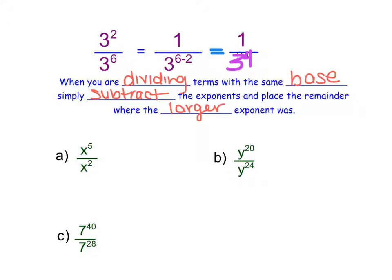We're going to practice this with a couple of examples. In example A, I have x to the power of 5 and x to the power of 2 on different sides of my fraction, and because they have a common base, I know that I can subtract them. So 5 minus 2 equals 3. I know that I have 3 x's left, and because I had more x's in my numerator to start — there were 5 — I know that my remaining x's are in the numerator, and that I have a 1 in my denominator.